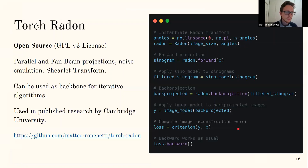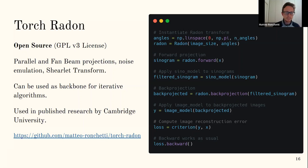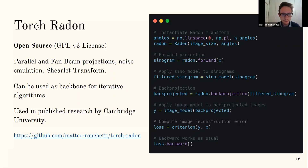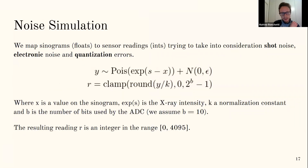The library was released on GitHub under an open source license. It implements parallel projection and fan projection, as well as noise emulation and the Radon transform. It is designed to be used as a standard neural network layer for machine learning, but can also be used for iterative algorithms to leverage GPU speed and batch processing. This library has also been used in published research by Cambridge University.